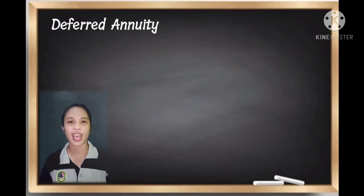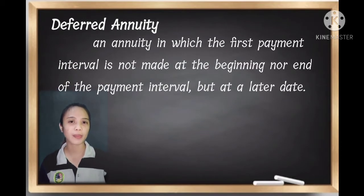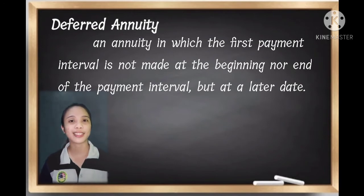What is Deferred Annuity? Deferred Annuity is an annuity in which the first payment interval is not made at the beginning nor end of the payment interval, but at a later date.